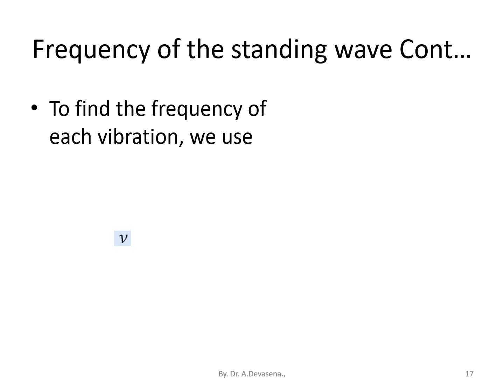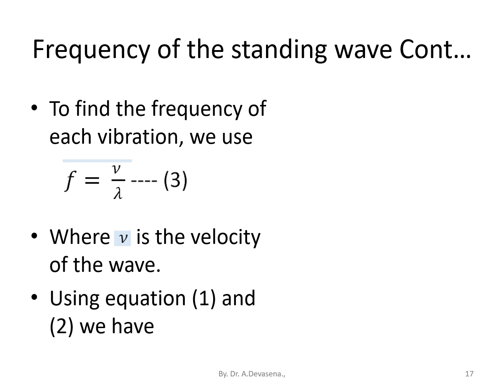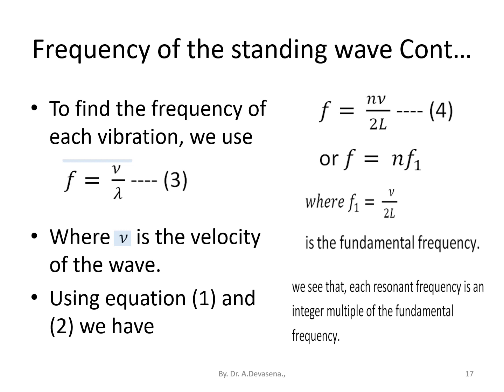To find the frequency of each vibration we use f = v/λ (equation 3), where v is the velocity of the wave. Using equations 1 and 2, we have frequency f = nv/2L. Consider this equation 4, or f = n × f₁, where f₁ = v/2L is the fundamental frequency. We see that each resonant frequency is an integer multiple of the fundamental frequency.